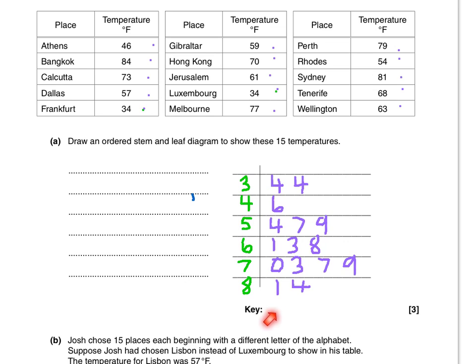The only other thing missing is I need to complete a key. A key just needs to be a little note saying three, then a line, and four equals 34. That's just explaining what a stem and leaf diagram is all about.